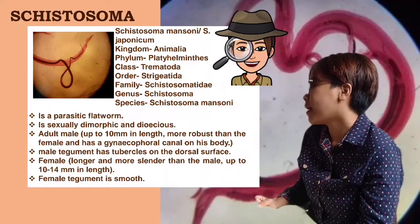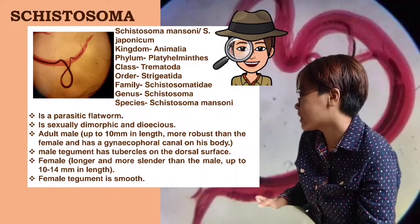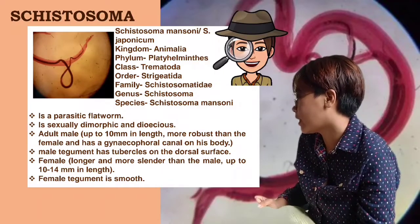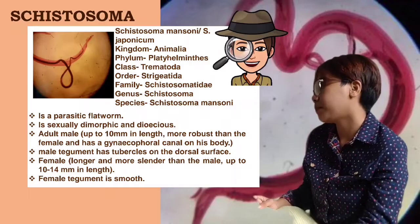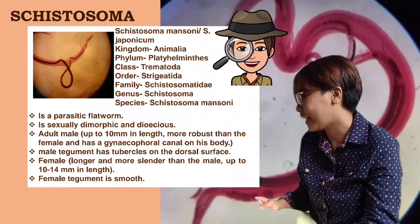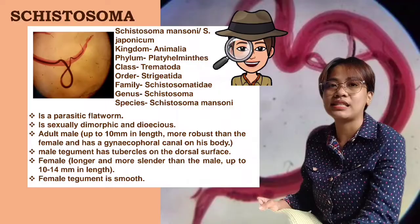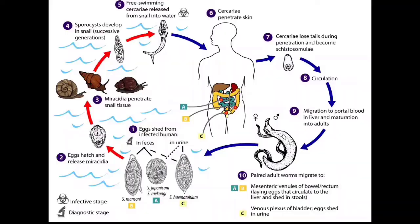The female is longer and more slender than the male, up to 10 to 14 mm in length. The female tegument is smooth. Tegument means the outer body covering of members of Phylum Platyhelminthes.